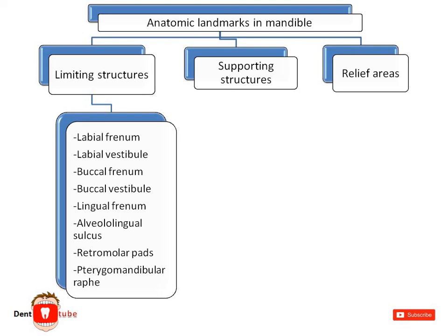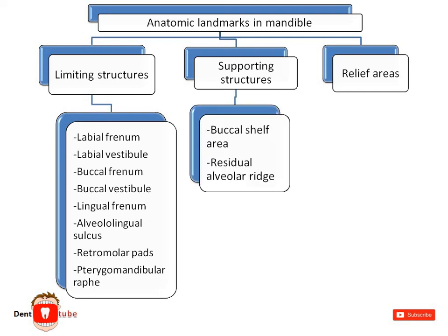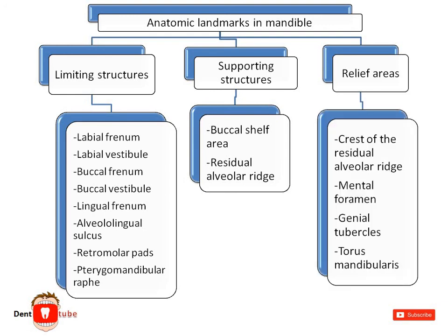Under supporting structures we have the buccal shelf area and residual alveolar ridge. Under relief areas we have the crest of the residual alveolar ridge, mental foramen, genial tubercles, and torus mandibularis.